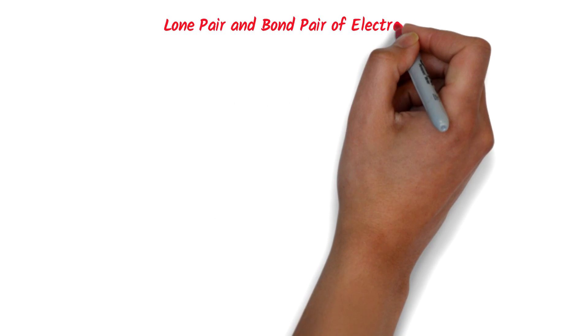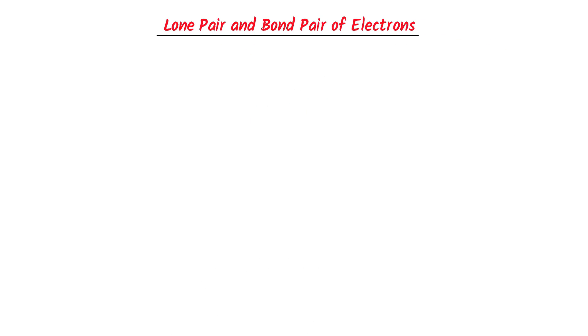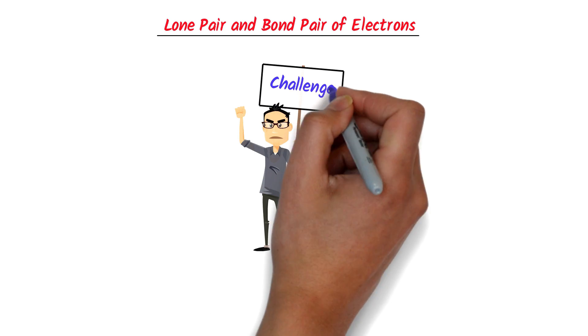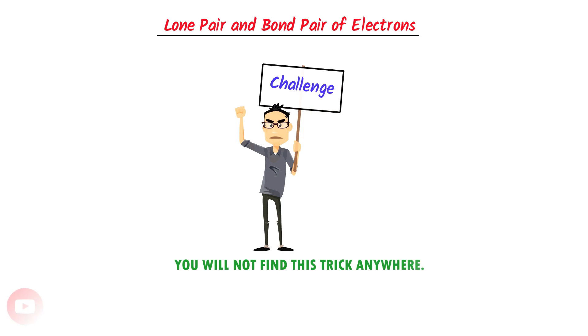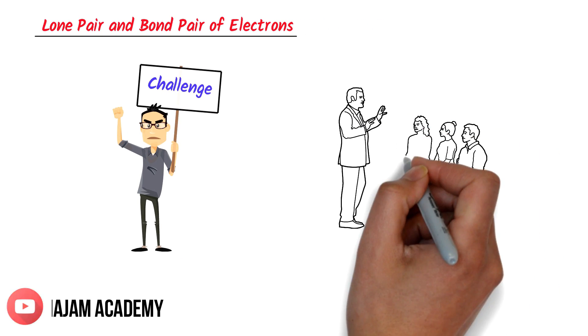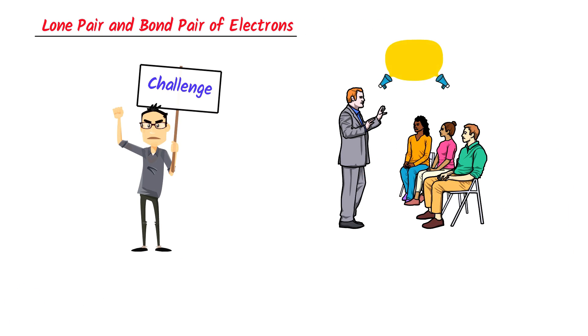Super easy trick to calculate bond pairs and lone pairs of electrons on a central atom. I challenge you that you will not find this trick anywhere, because it is my personal trick which I only teach to special students to crack any exam. Now let me teach you my personal trick to find bond pairs and lone pairs of electrons in any molecule.